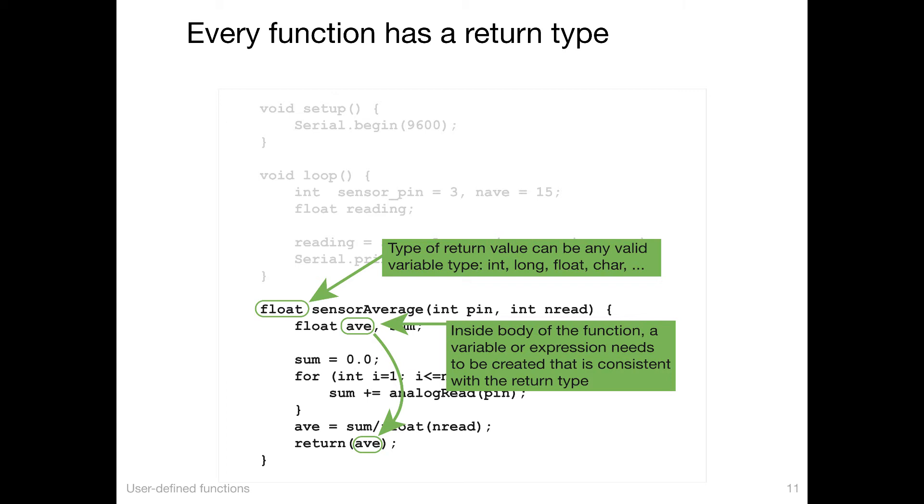Inside the function, we do operations. And the last line, where it says return ave, the last line is where the result of those calculations get passed back out to the calling function. So the calling function is expecting a float because of the nature of the function definition. And so we have to provide it internally with a value that's a float.